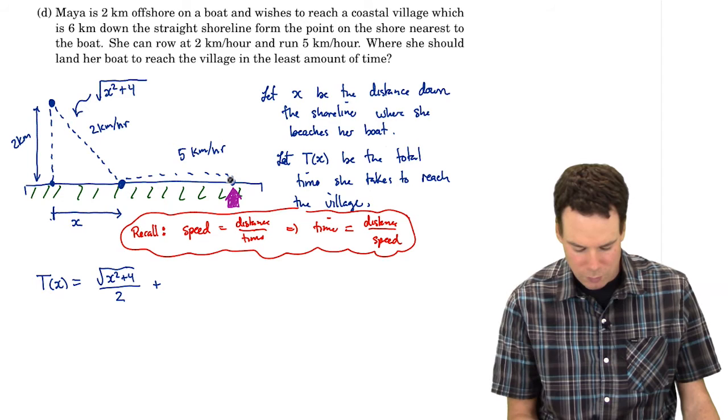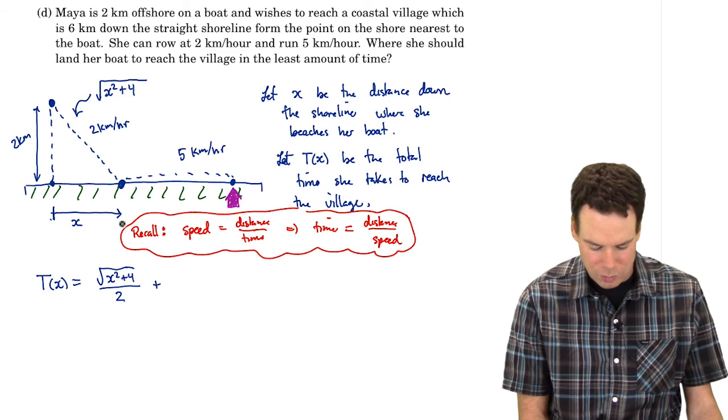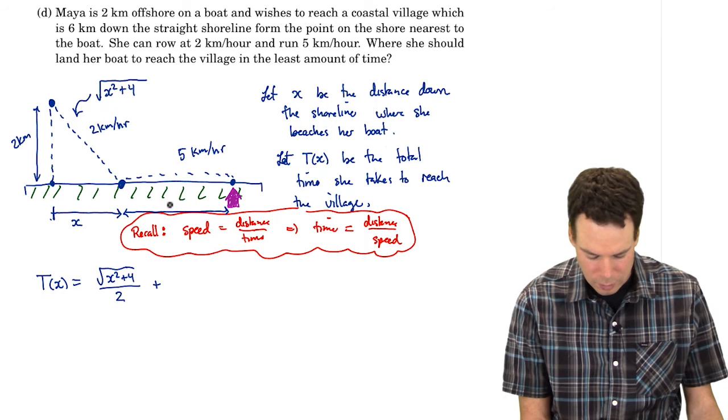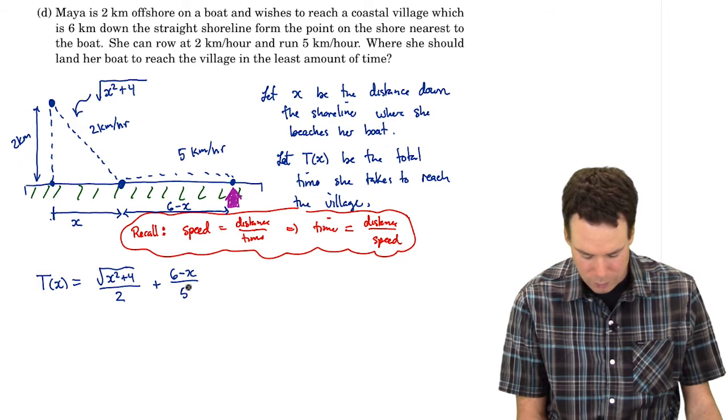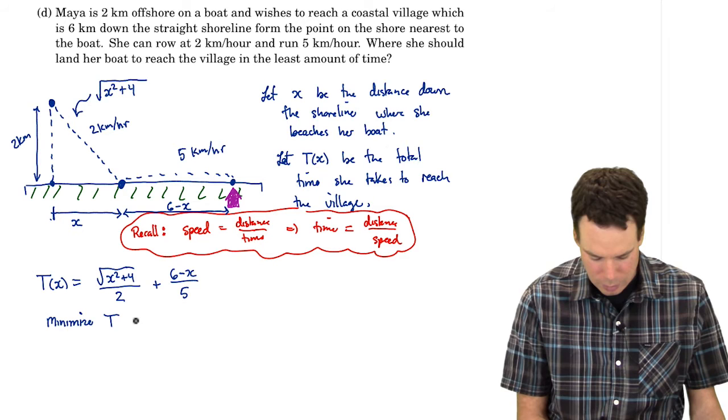But then she's also got to run. How far does she have to run? Well she has to run the remaining distance. How far is the remaining distance? Well it's 6 kilometers down the shoreline. If she's already gone x kilometers down the shoreline by rowing then the remaining is 6 minus x. So the remaining is 6 minus x divided by 5. So there's our total time it takes for the trip. And we want to minimize this.